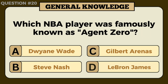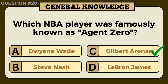Last question: which NBA player was famously known as Agent Zero? Answer: C — Gilbert Arenas.